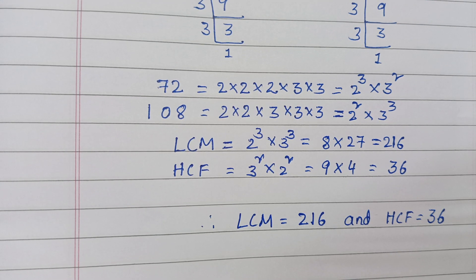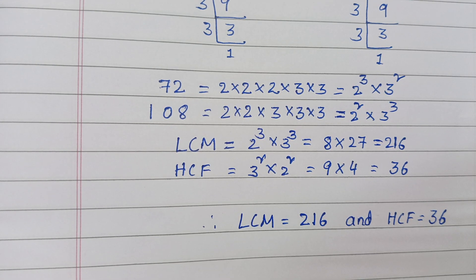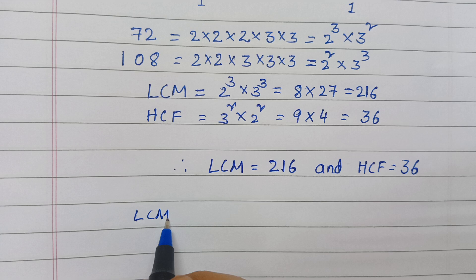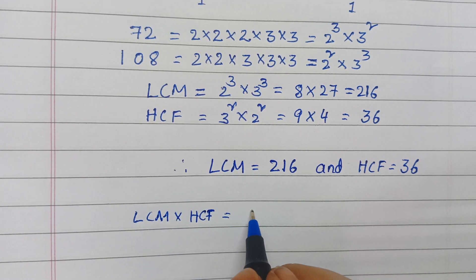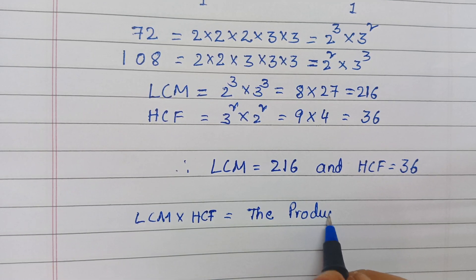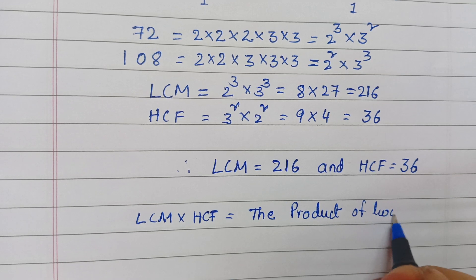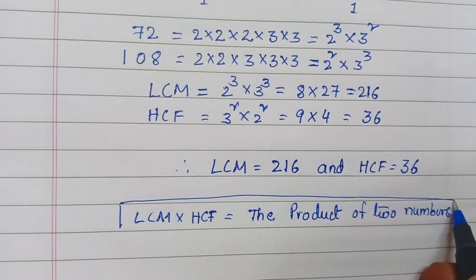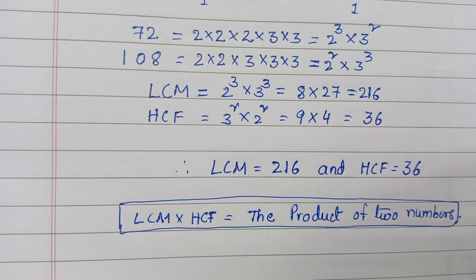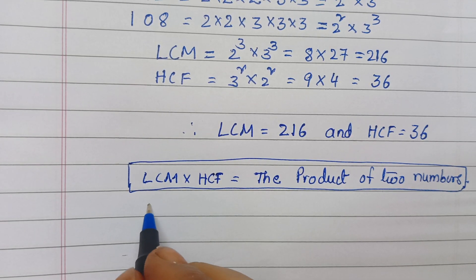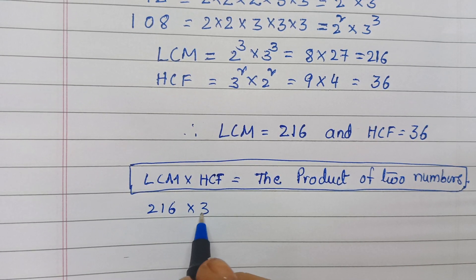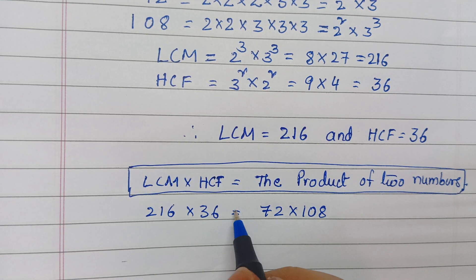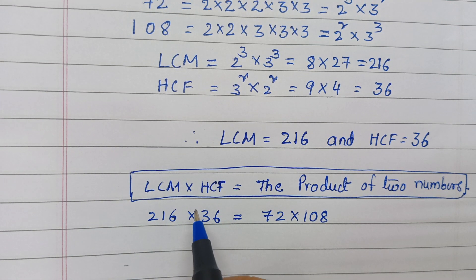To verify the LCM and HCF of 72 and 108, we use the checking formula: LCM × HCF equals the product of the given two numbers. LCM is 216, HCF is 36, and the given numbers are 72 and 108. If both sides are equal, our answers are correct.